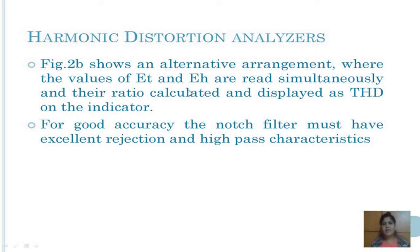With the help of the notch filter, we get good accuracy and excellent rejection with bandpass characteristics. An example of such a notch filter is the Wainbridge bridge. It is a common form of the notch filter which balances at one frequency only, and at this frequency the output voltage at the null detector of the bridge is minimum.